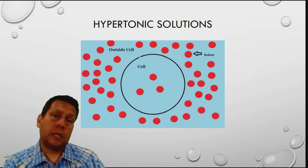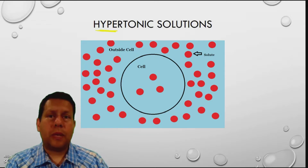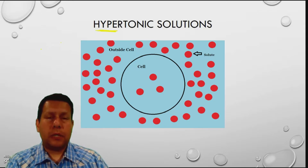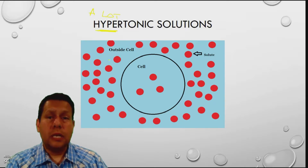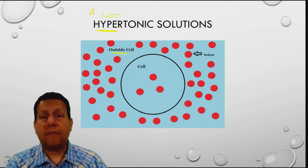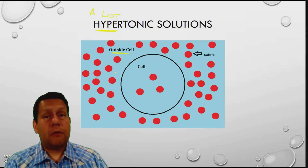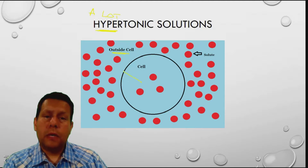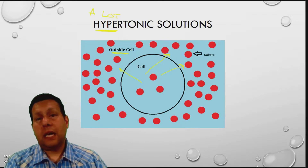Here's a hypertonic solution. I emphasize hyper because whenever we hear hyper, we think of a lot — like someone who has a lot of energy. Hyper means a lot of solute in the solution. You can see outside the cell we have a lot of red particles, and inside the cell we don't have as much. Wherever there's more solute, water will follow. So water is going to run out of this cell and it is going to shrink in size. That's a hypertonic solution.